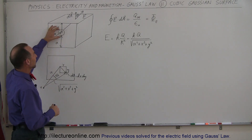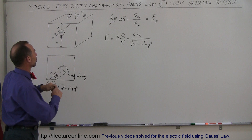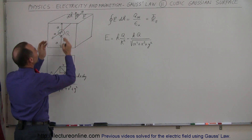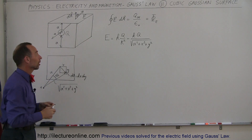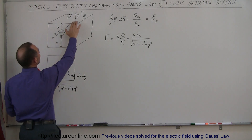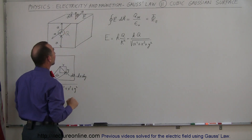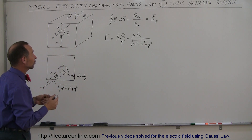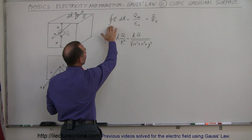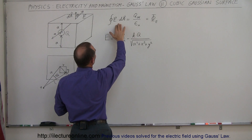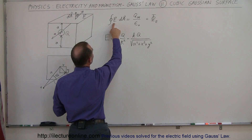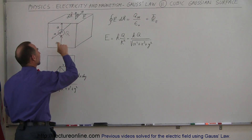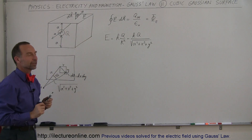Let's say we have a point charge right here with charge Q on it. We put a cubic Gaussian surface around that charge and we want to find what the electric field strength is at any point along the surface. We use Gauss's Law: the surface integral of E dot dA equals Q inside divided by epsilon sub zero. Q inside is simply Q, and epsilon sub zero is our constant.